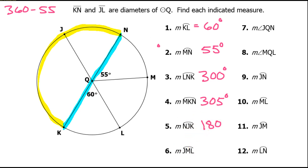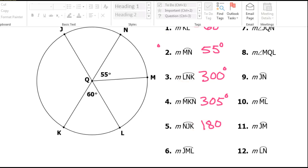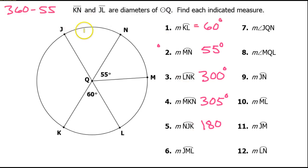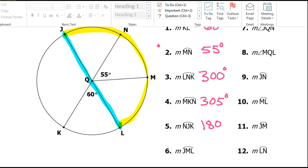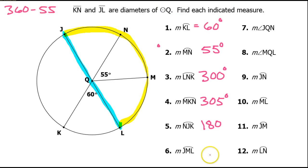What about arc J, M, L? That's really the same concept we just did. If I notice that segment JL is a diameter of the circle, then that makes this a semicircle. So again, I know that this will be 180 degrees.